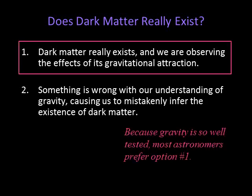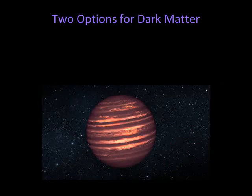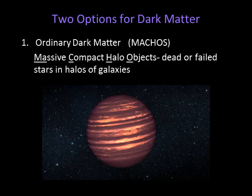If we agree dark matter exists, then what is it made of? There are two basic possibilities. Dark matter could be ordinary matter — the matter we're used to — only we can't see it. A possibility astronomers thought of early on was celestial objects like brown dwarfs, white dwarfs, and black holes. We may not be able to see these objects, but they certainly have mass. Astronomers call these objects MACHOs, which stands for Massive Compact Halo Objects.